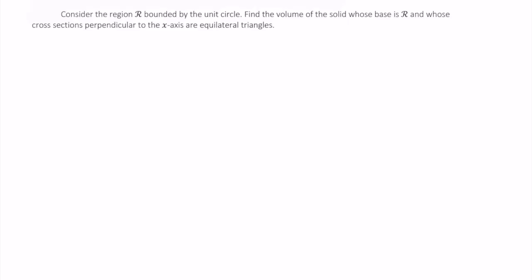Welcome. In this video, we're going to continue to find the volumes of solids whose base is given as a region and then a description of their cross sections is also given. So for this example, let's consider the region R bounded by the unit circle. Find the volume of the solid whose base is this region and whose cross sections perpendicular to the x-axis are equilateral triangles.